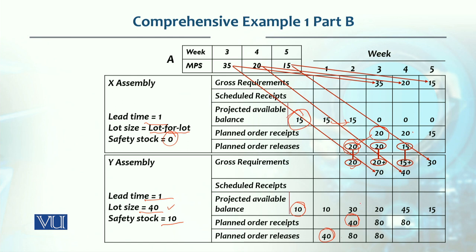With Y's lot size data applied: a requirement of 20 gives us 30 ending inventory in the second week. In the third week, we need 90 units (20+70). We only have 30, so we need two lot sizes (2×40=80). With 80 received plus 30 on hand, that is 110 minus 90 gives us 20 as ending inventory for week three.